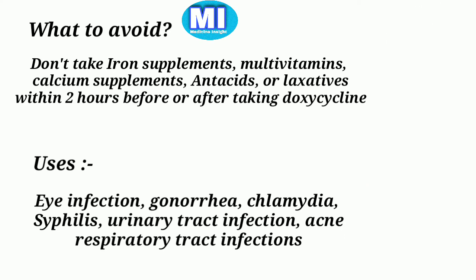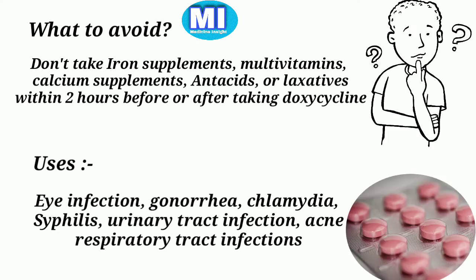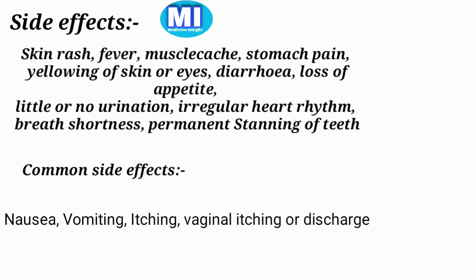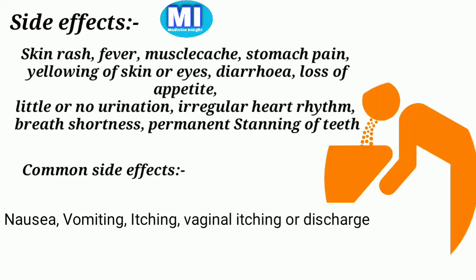Uses: doxycycline is used for eye infections, gonorrhea, chlamydia, syphilis, urinary tract infections, acne, and respiratory tract infections. Side effects include skin rash, fever, muscle pain, yellowing of the skin or eyes.